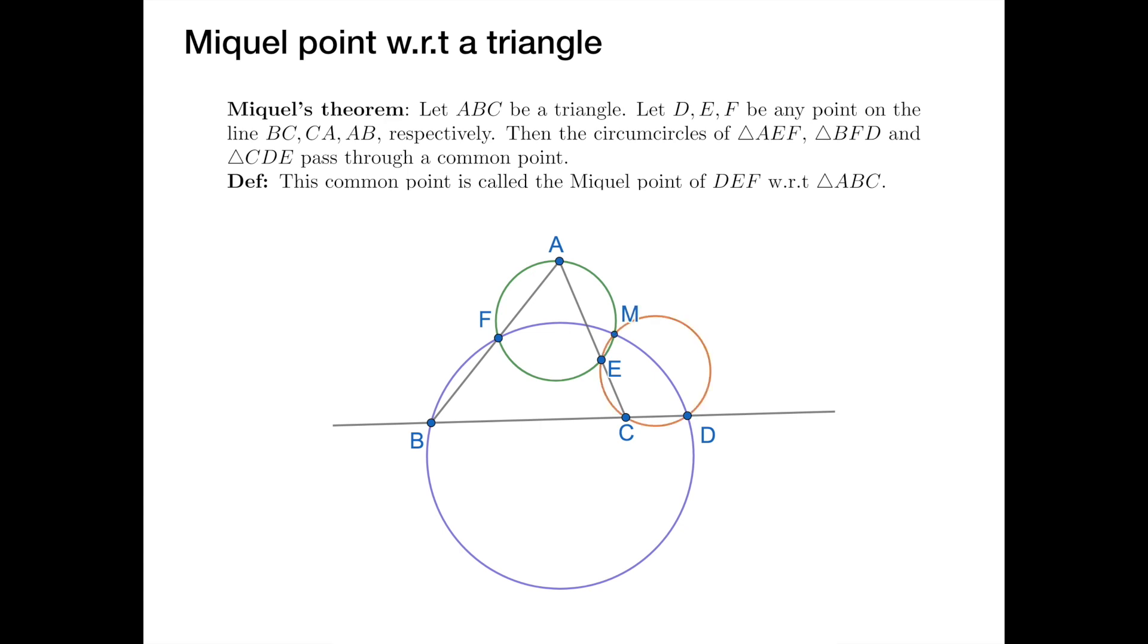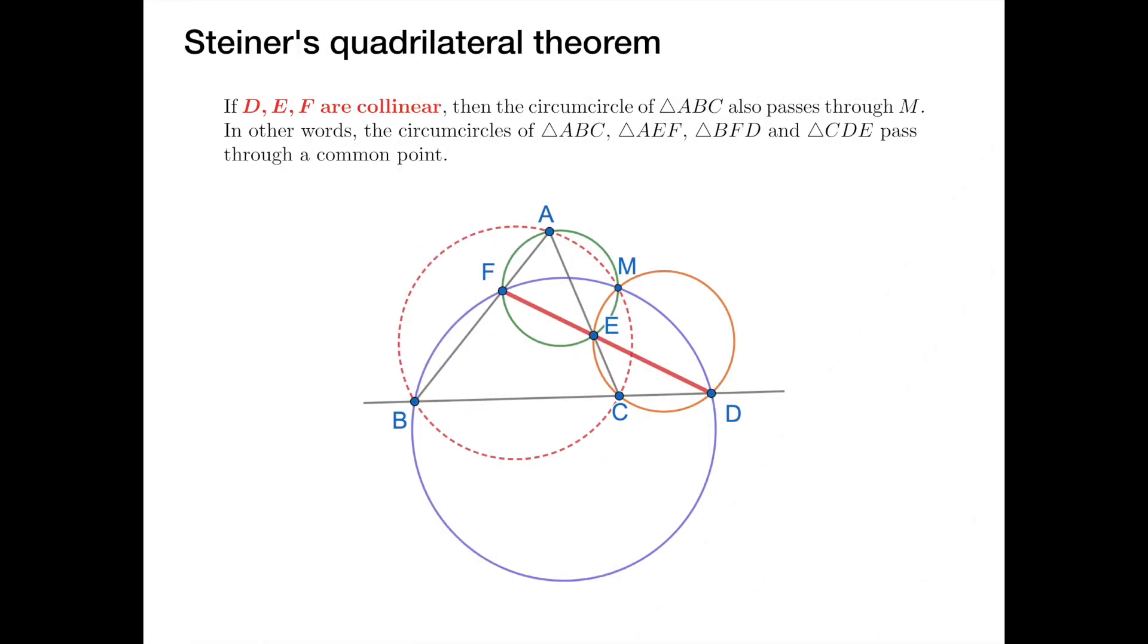Now you may ask how this theorem is related to the Miquel point I defined in the first lesson. So let's consider a special case that the points D, E and F are collinear. Indeed, if D, E and F are collinear, then we get the Steiner's Quadrilateral theorem. In this case, the Miquel point M lies on the circumcircle of the triangle ABC, which is not true in general.